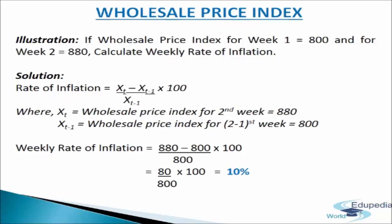For the solution, we apply the formula: Weekly rate of inflation = (X_T − X_(T−1)) / X_(T−1) × 100. Here X_T = 880 and X_(T−1) = 800. Putting in the values: (880 − 800) / 800 × 100 = 10%. So 10% is the weekly rate of inflation.